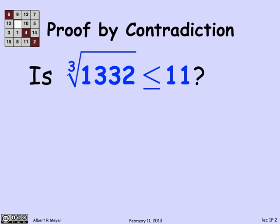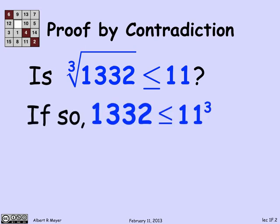Let's just suppose that this inequality was true, that is, that the cube root of 1,332 was less than or equal to 11. Well, if that was true, then what I could do is cube both sides. And I'll conclude that 1,332 is less than or equal to 11 cubed. Now, 11 cubed is a lot easier to compute than the cube root of 1,332. As a matter of fact, 11 cubed is 1,331.